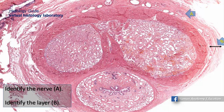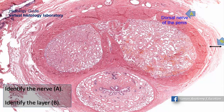This is a cross-section of the penis. You can see that the penis is surrounded by deep fascia. B here is the thickness of the deep fascia of the penis, Buck's fascia. Within the fascia, we have a neurovascular bundle consisting of arteries, veins, and nerves — the dorsal artery of the penis and the dorsal nerve of the penis.